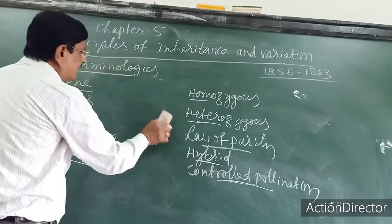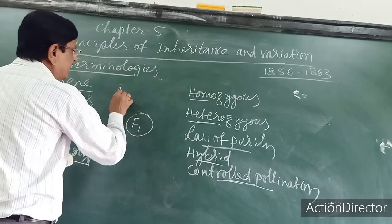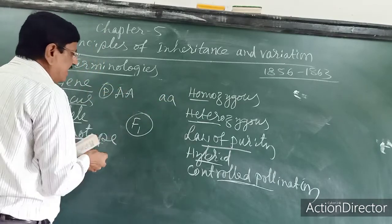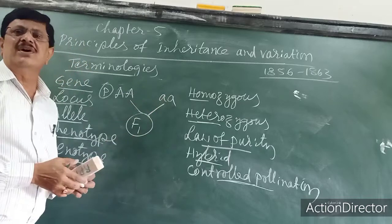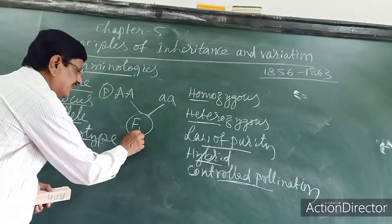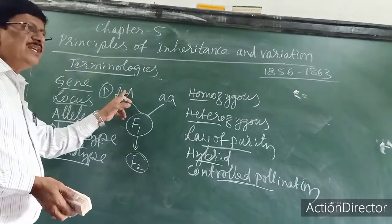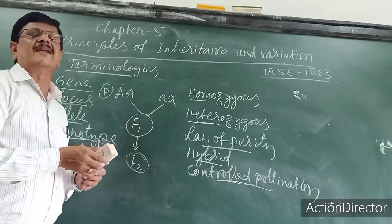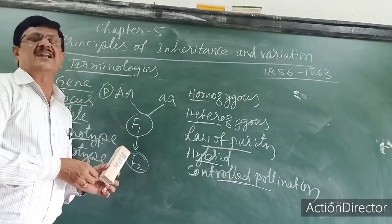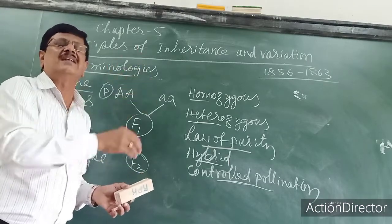After crossing, the hybrid cross produces the F1 generation — first filial generation. After allowing F1 to self-pollinate, we get the F2 — second filial generation. F1 and F2 are important terminologies in Mendel's experiments.